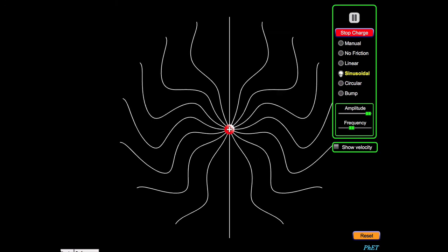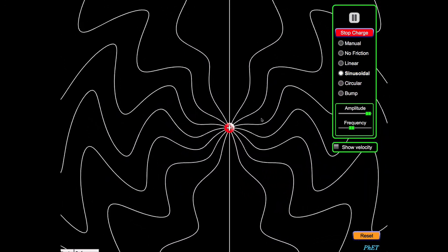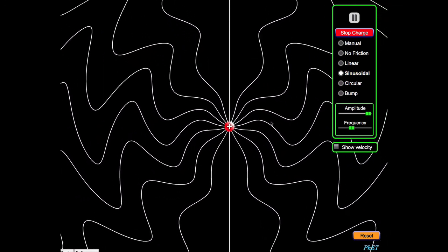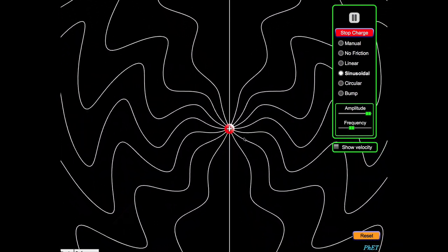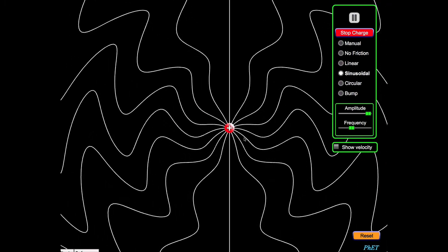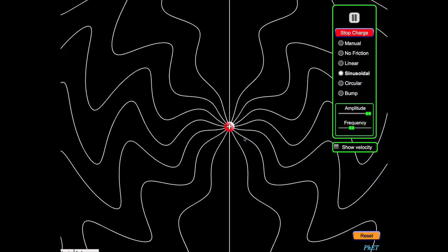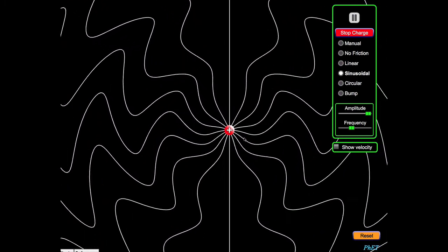If I now set it in motion, sinusoidally, we see we get these oscillations coming off in the sideways direction. These are oscillating electric fields that come along with an oscillating magnetic field. And that's really simply electromagnetic radiation from an oscillating charge.